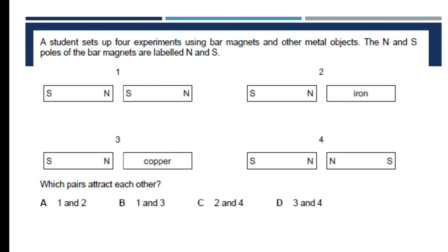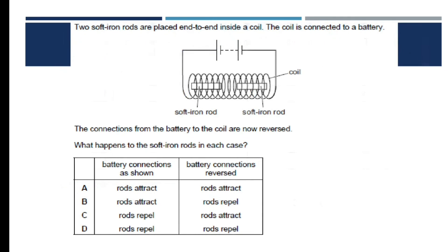Third question: a student sets up four experiments using bar magnets and other metal objects — which pair attracts each other? The answer is A: pairs one and two. Pair one has opposite poles facing each other, and pair two has one magnetic material and a north pole. Fourth question: two soft iron rods placed end to end inside a coil connected to a battery — what happens when the battery connection is reversed? The answer is: the rods attract in both cases.